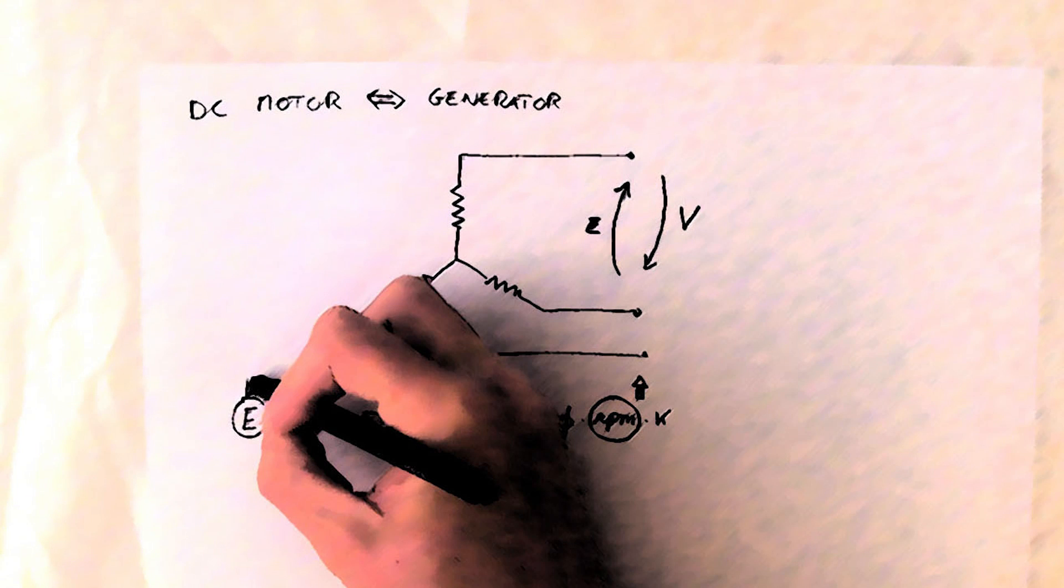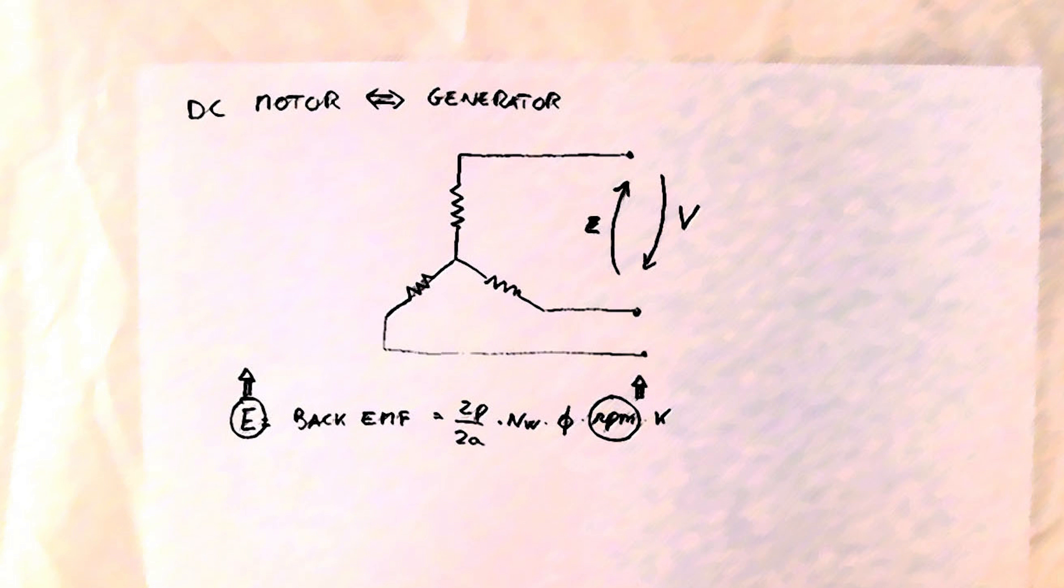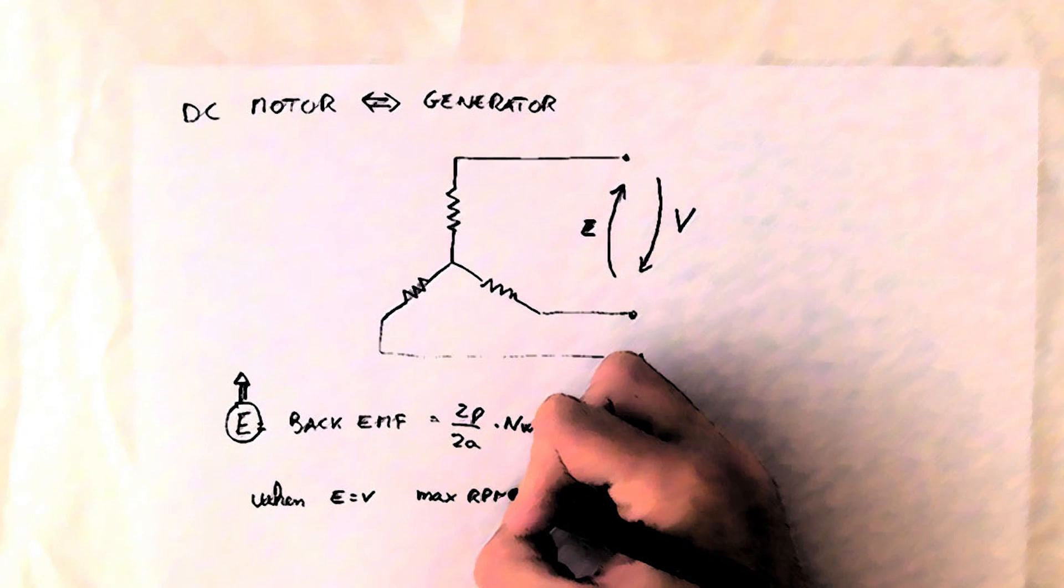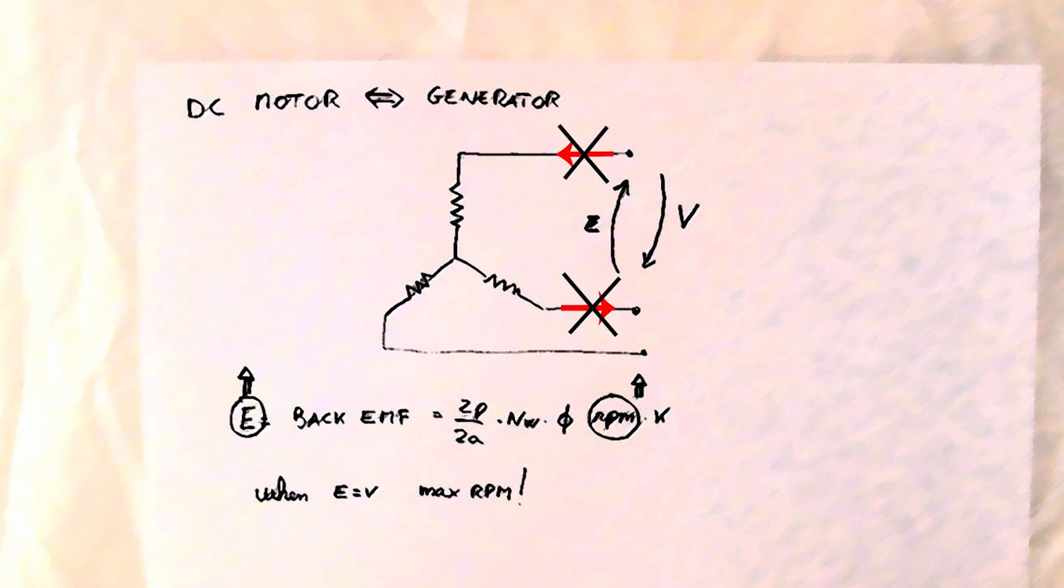As the speed goes up and the motor rotates faster, the back EMF increases, up to a point where it equals the battery voltage and the current cannot circulate anymore and the maximum possible RPM is reached.